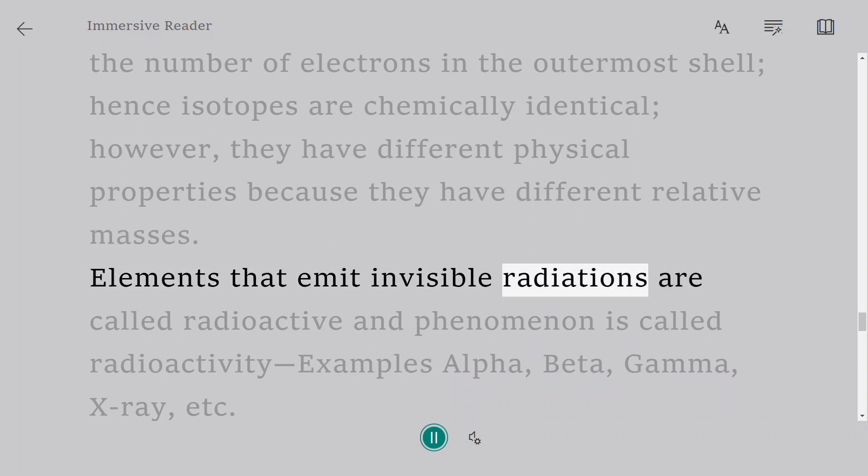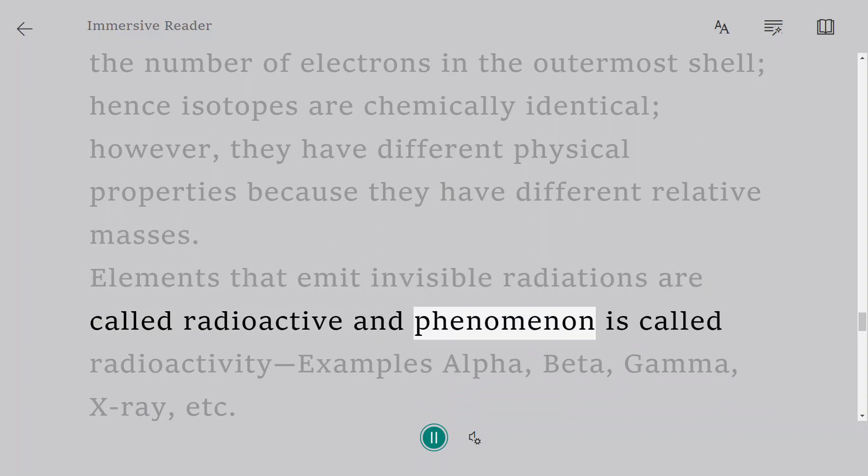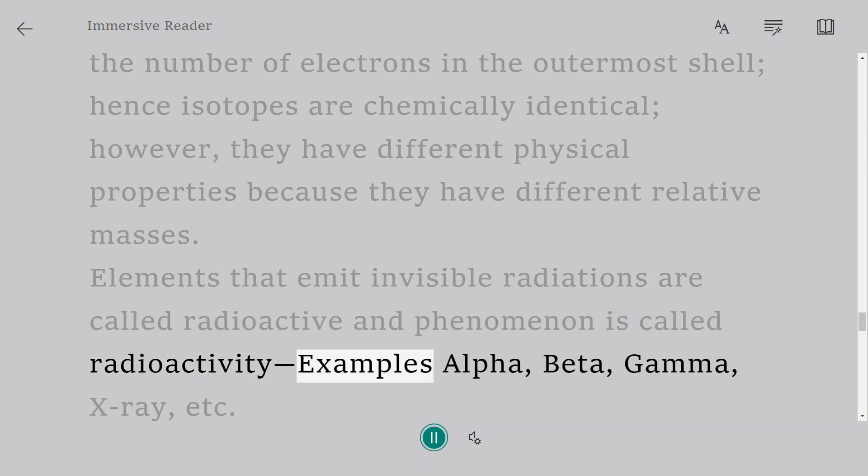Elements that emit invisible radiations are called radioactive and the phenomenon is called radioactivity. Examples: alpha, beta, gamma, x-ray, etc.